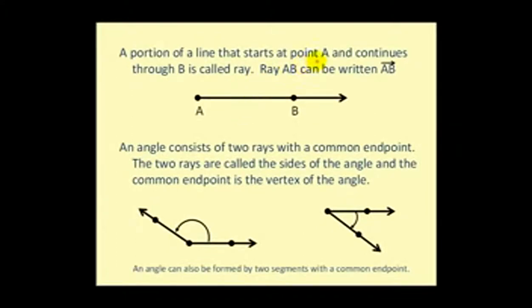A portion of a line that starts at point A and continues through B is called a ray. Ray AB can be written using this notation.